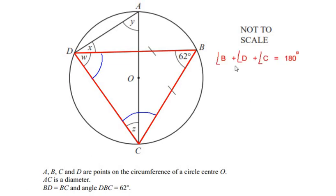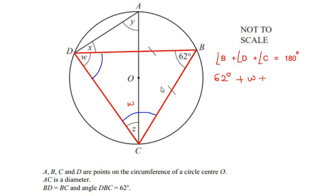Using the angle sum property: angle B + angle D + angle C = 180 degrees. Angle B is given as 62 degrees, angle D is W, and angle C is also W since the triangle is isosceles. So we write: 62 + W + W = 180 degrees.